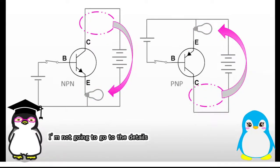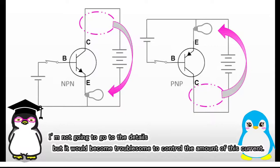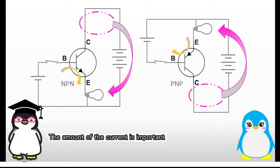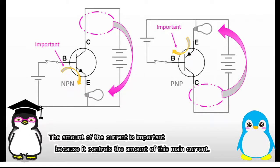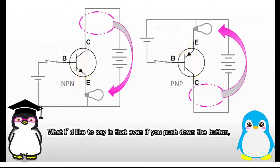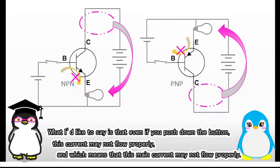Why? What would happen if the circuit were like this? I'm not going to go to the details, but it would become troublesome to control the amount of this current. The amount of the current is important because it controls the amount of this main current. What I'd like to say is that even if you push down the button, this current may not flow properly, and which means that this main current may not flow properly.